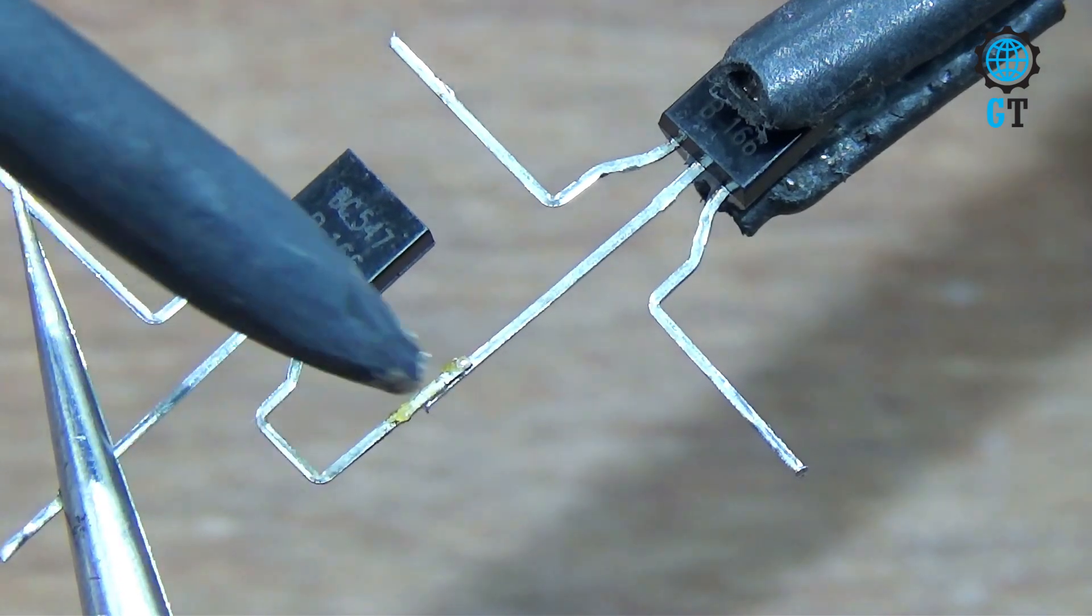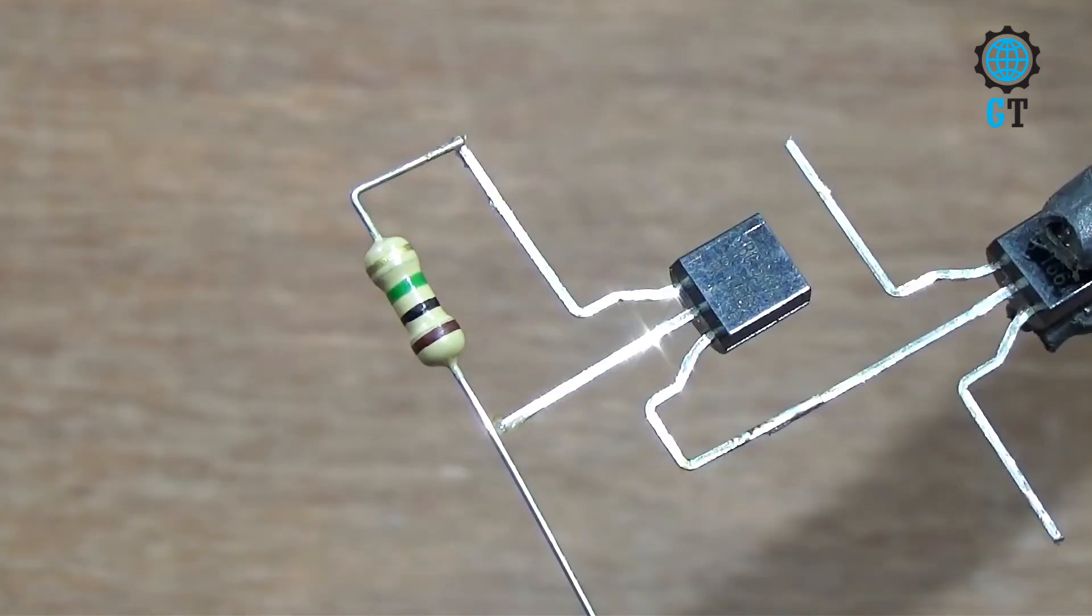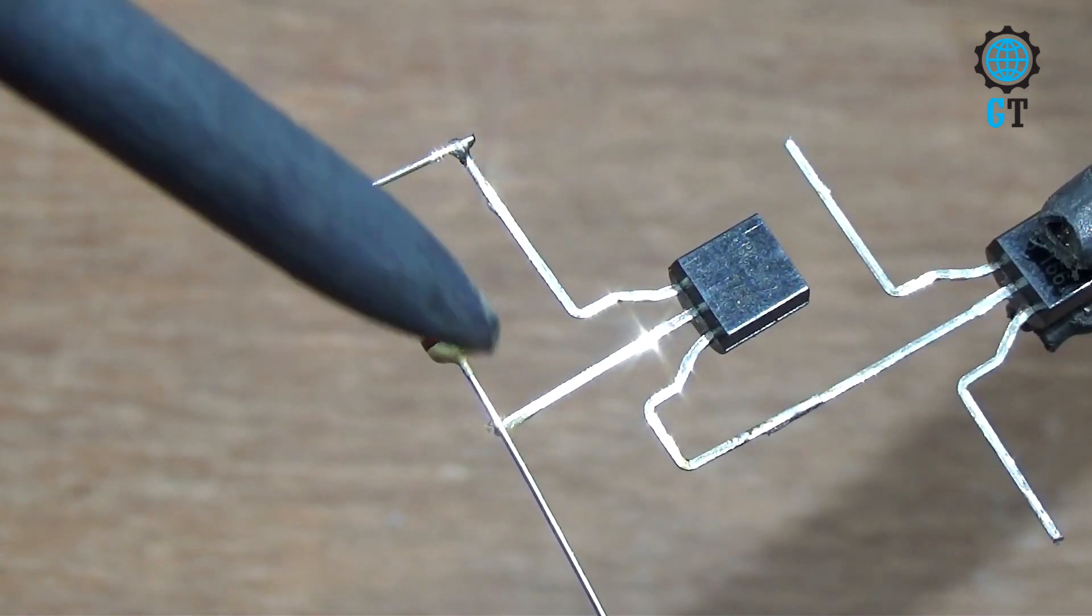Now we connect one transistor collector with other transistor base. Now we connect resistor. Connect resistor with collector and base of transistor.